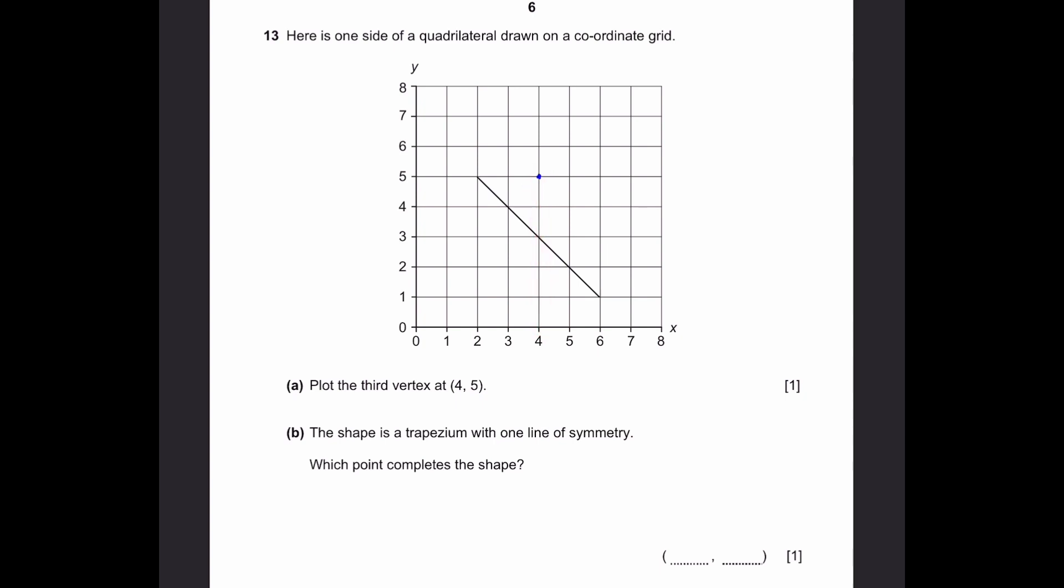Part B: The shape is a trapezium with one line of symmetry. Which point completes the shape? So I just label this as 4,5. And assuming we draw a line, we need to make a trapezium. If we tilt it diagonally, we can see that this is the base and this is one side. If we make another side here and connect it, it's a trapezium. It has one line of symmetry, which is this diagonal line. So the point which connects it is 6,3. These two sides are equal length. It's an isosceles trapezium. That's why it has one line of symmetry.